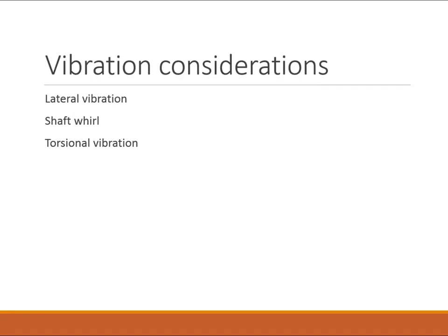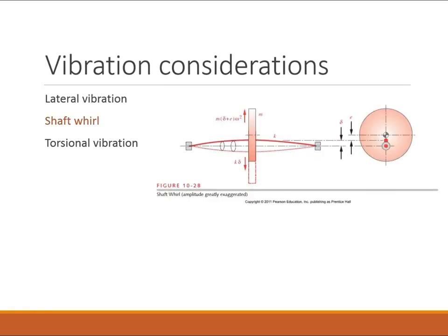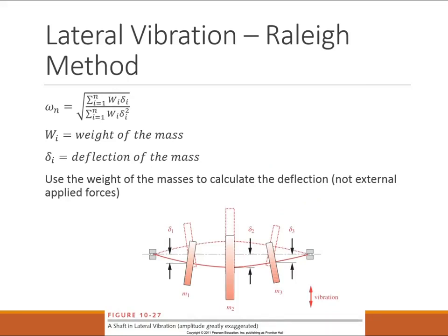I also want to talk a little bit about other vibration considerations. There's three major vibrations that shafts can undergo. The one that's most commonly thought about is just lateral vibration. So in this one the shaft just bounces up and down. Shaft whirl happens because of eccentricity in the shaft. The shaft stays in a deformed position and rotates around that position like a jump rope. And then finally the third one, torsional vibration is harder to visualize. But there is some vibration that happens torsionally. All of these need to be considered. In this class, just to give a taste of the type of thing you might do, we're just going to consider lateral vibration.